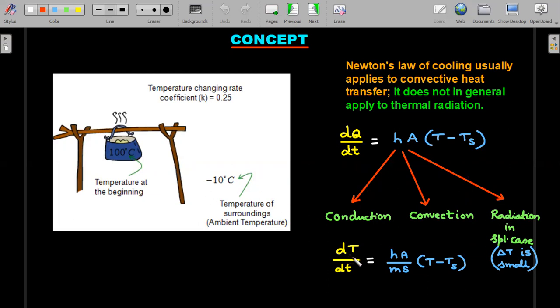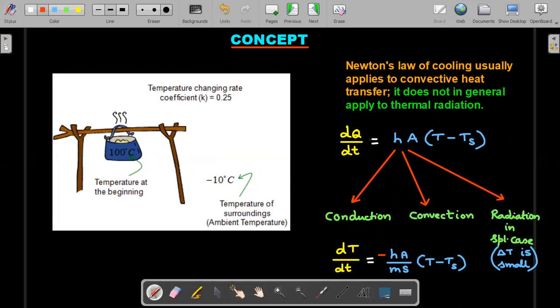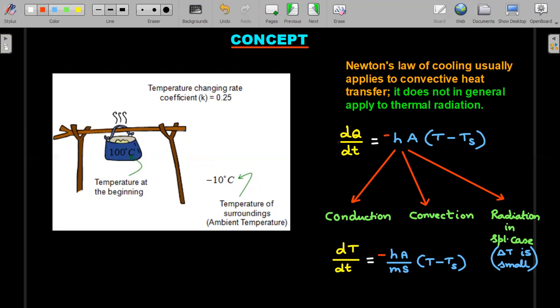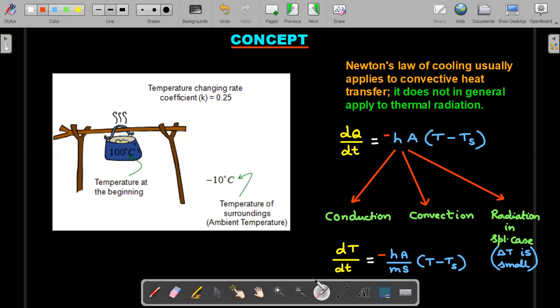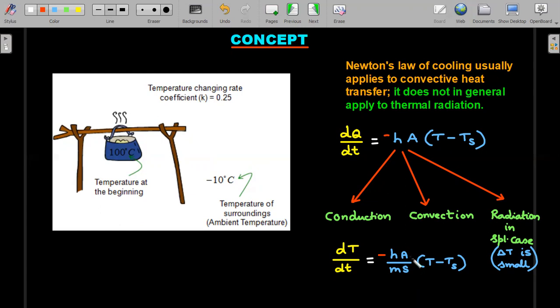If you write dQ/dt for that solid body as mS dT/dt and bring that mS down, then your k is actually this particular term hA/mS. You could see now that k is directly proportional to A, inversely proportional to m.